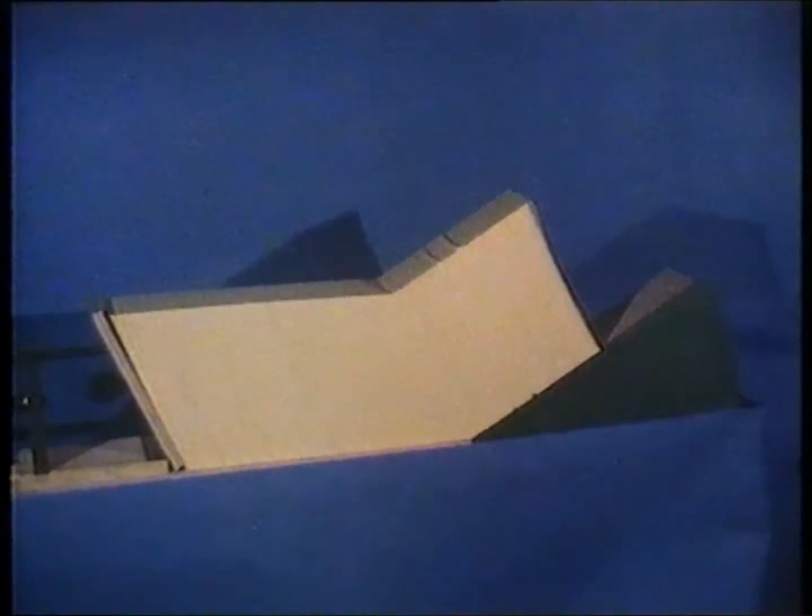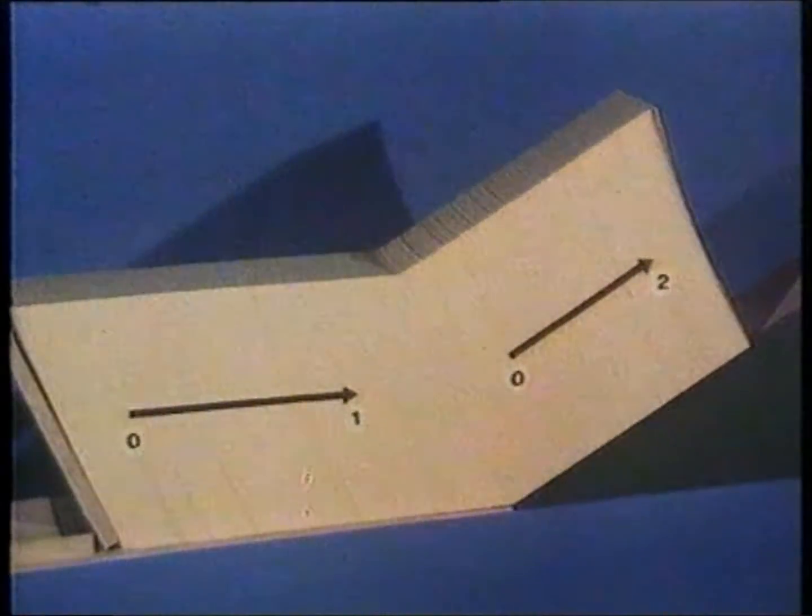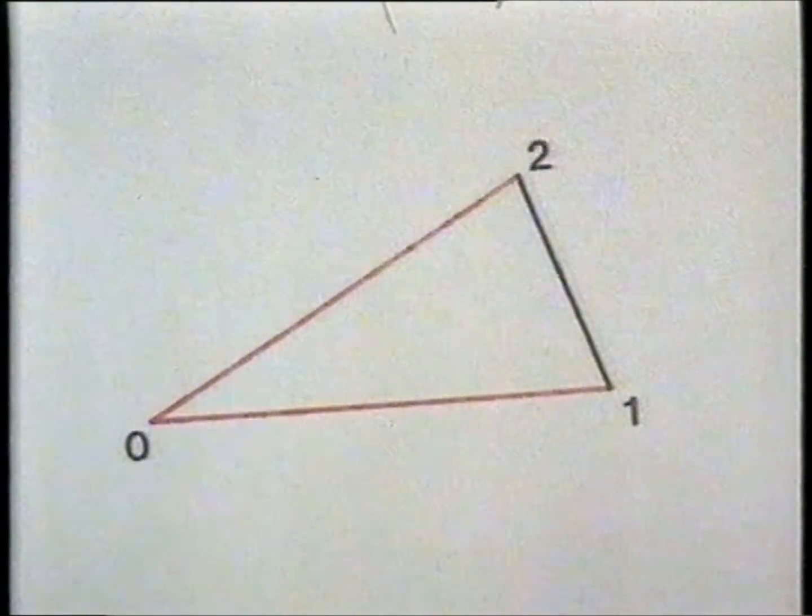In this model the material is replaced by a stack of cards. The material velocities on either side of the shear zone are represented by vectors 0 to 1 and 0 to 2. Drawing these two vectors from the same origin produces the shear velocity in the direction of the discontinuity line, vector 1, 2. This velocity diagram is called the hodograph.